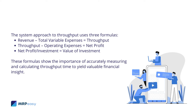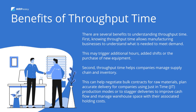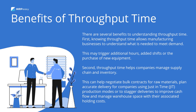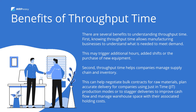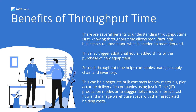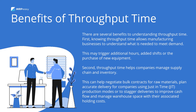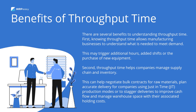These formulas show the importance of accurately measuring and calculating throughput time to yield valuable financial insight. There are several benefits to understanding throughput time. First, knowing throughput time allows manufacturing businesses to understand what is needed to meet demand — this may trigger additional hours, added shifts, or the purchase of new equipment. Second, throughput time helps companies manage supply chain and inventory, helping to negotiate bulk contracts for raw materials, plan accurate delivery for companies using just-in-time (JIT) production modes, or to stagger deliveries to improve cash flow and manage warehouse space along with associated holding costs.